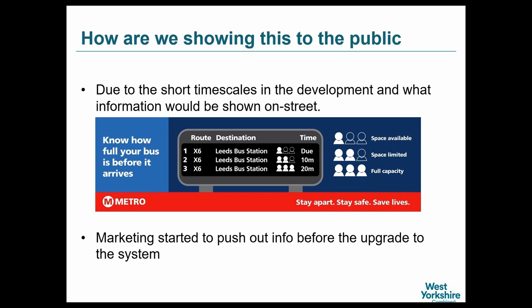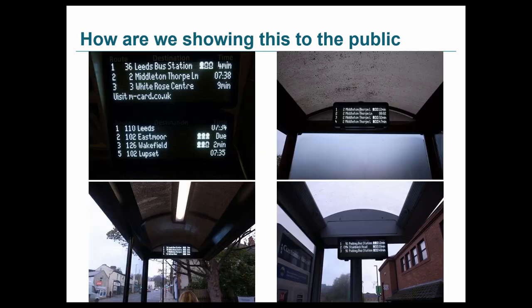Once ready, marketing came up with imagery showing how this is going to be shown to the public. We pushed it out on the web giving people indications of how this would be shown — probably three to four weeks before going live — and it was also pushed out on TFT screens, Twitter, and other media. For LED units, we've got around two thousand plus displays across West Yorkshire, and all of these now show occupancy level: green, amber, red for late-running, full capacity, or medium capacity on the signs.